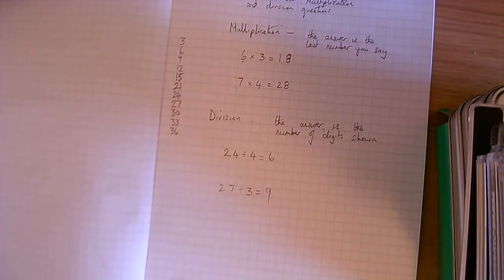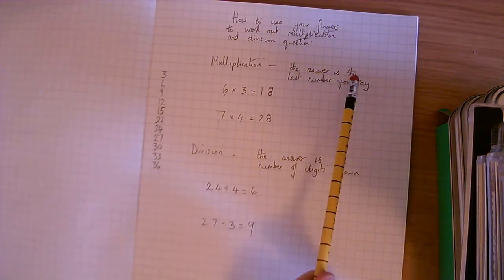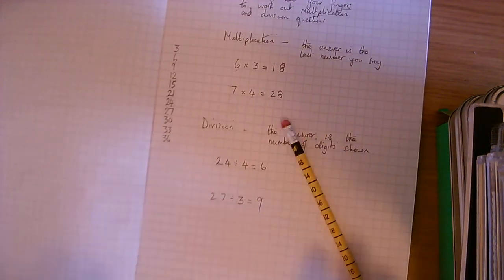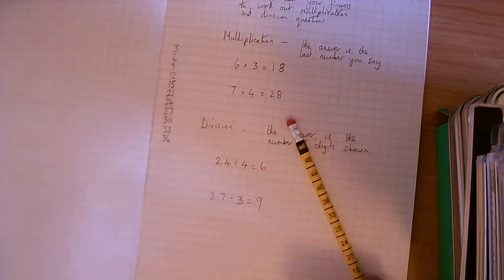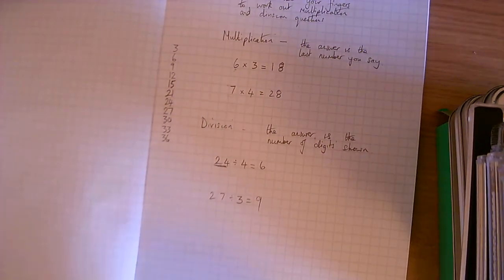And that is how you use your fingers to work out multiplication. Quick recap. Remember with multiplication, the answer, the last number you say is your answer. 6 times 3 is 18. Division, the answer is shown on your hands at the end. And you count up to the number here. And then you stop when you get to that number.